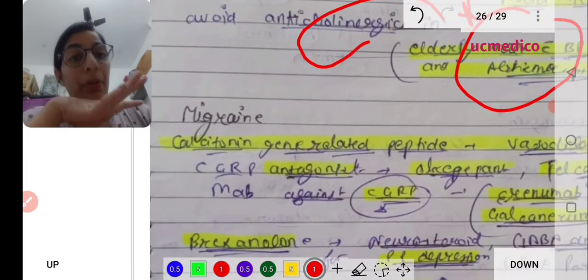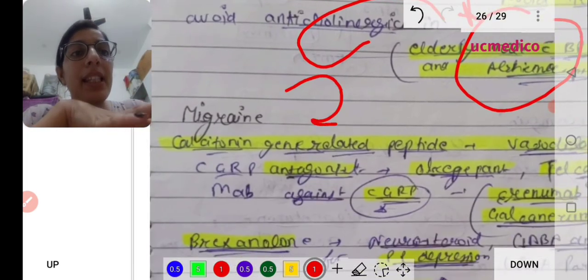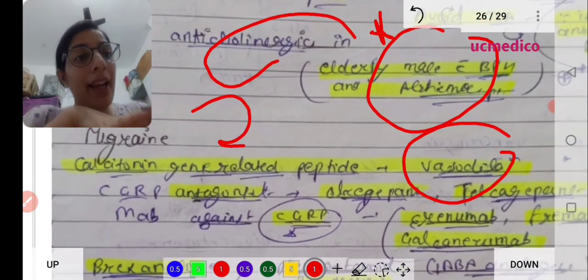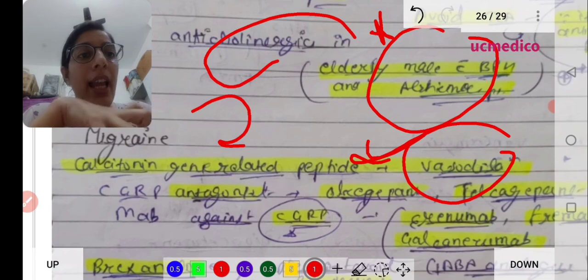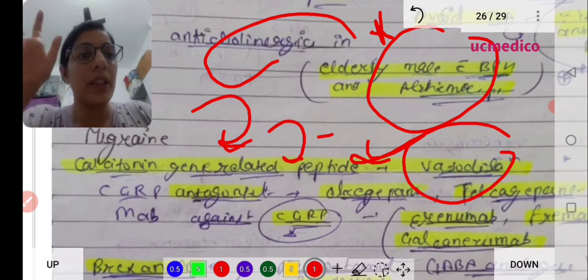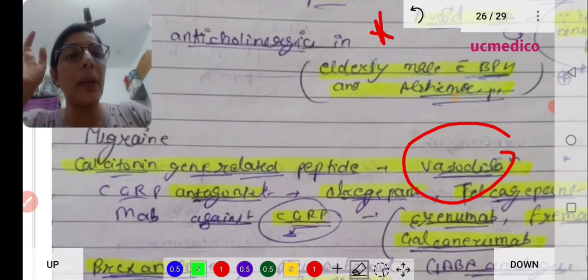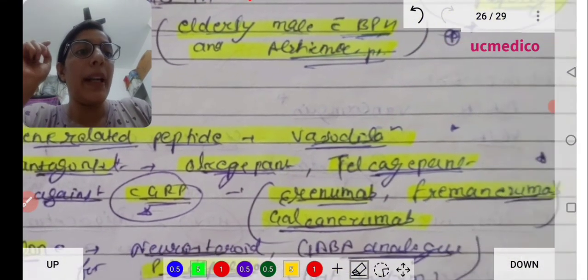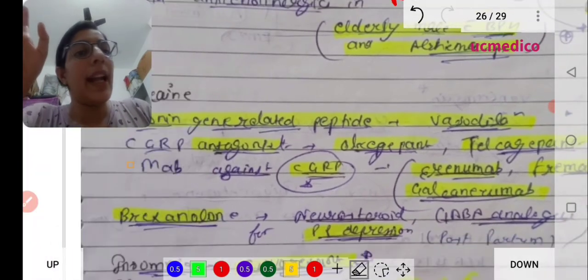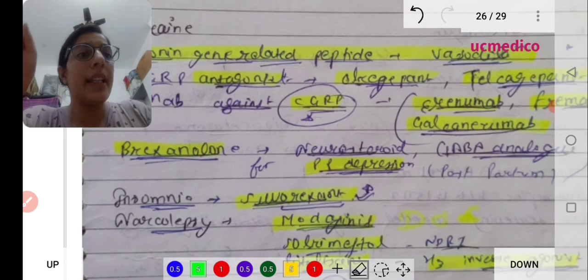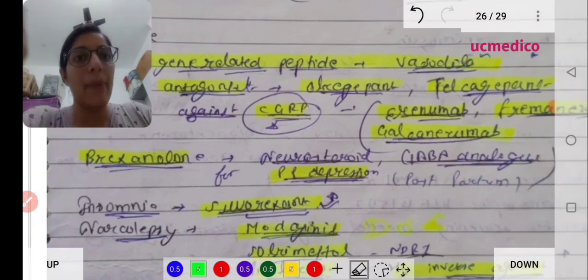For migraine, CGRP - because CGRP analog causes vasodilation. For treatment of migraine, we have to constrict, so we give CGRP inhibitors. These are CGRP antagonists like ubrogepant and telcagepant, and monoclonal antibodies against CGRP like erenumab.